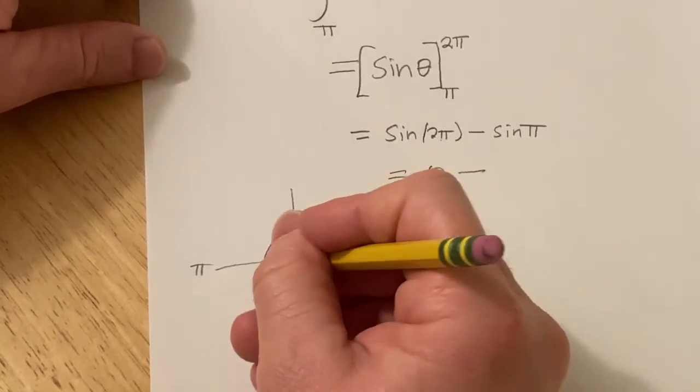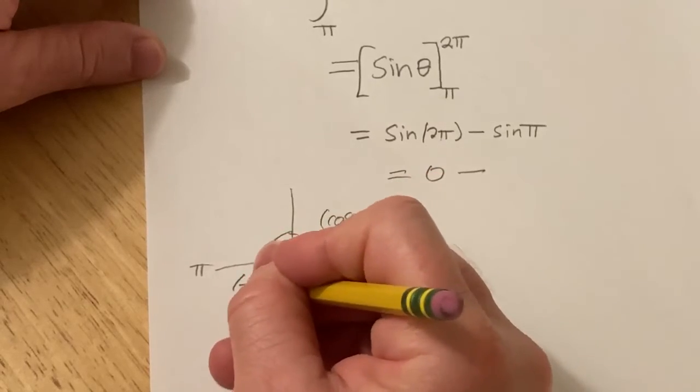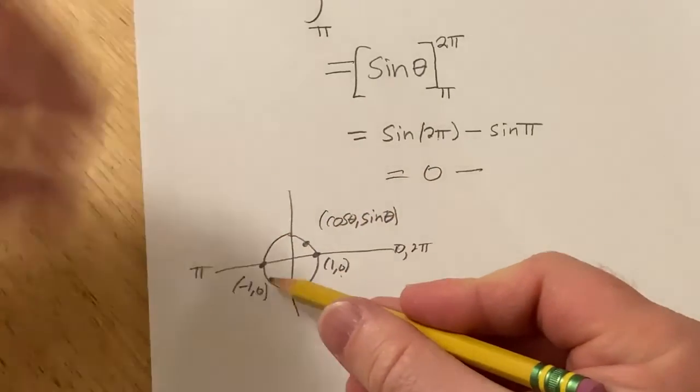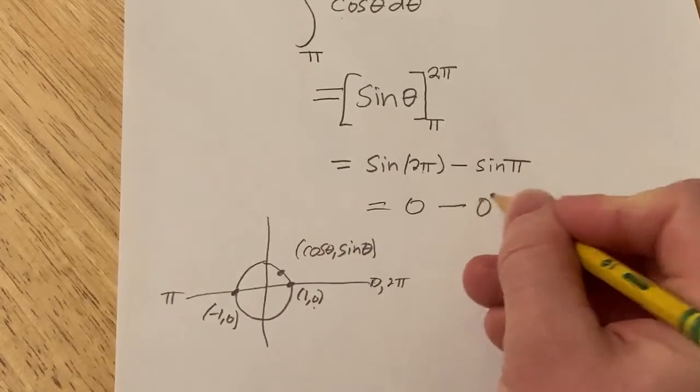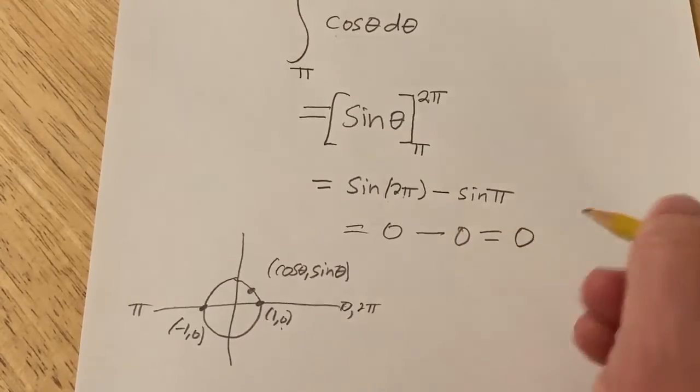And the sine of pi, this ordered pair here is negative 1, 0. And again, the y coordinate here is sine. So it's going to be 0. So this is equal to 0.